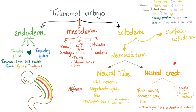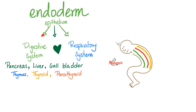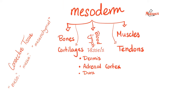The trilaminar embryo — pause and review. Endoderm derivatives: epithelium of the gut, epithelium of the respiratory system, parts of the heart, pancreas, liver, gallbladder, thymus, thyroid, parathyroid. Mesoderm — the keyword is connective tissue: bones and cartilages, muscles and tendons, blood and lymph, blood vessels and lymph vessels, dermis, adrenal cortex, dura mater.